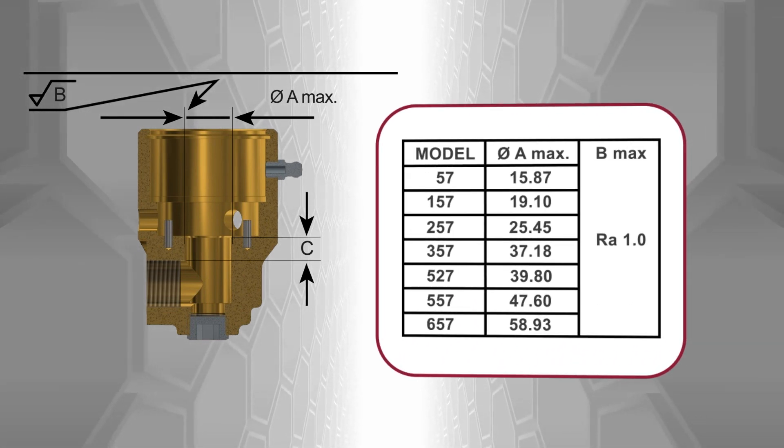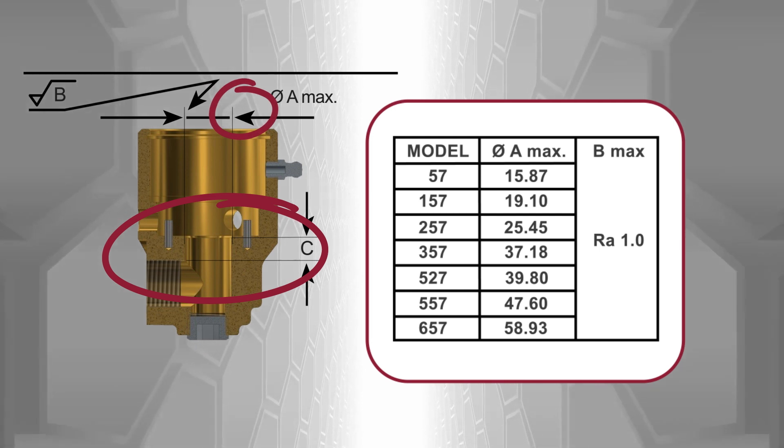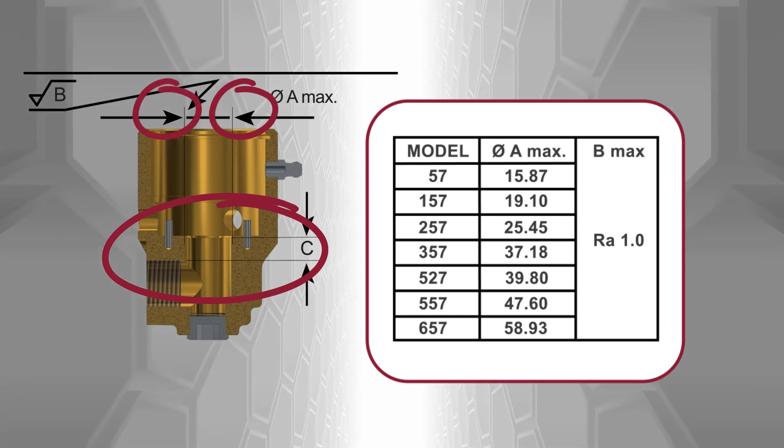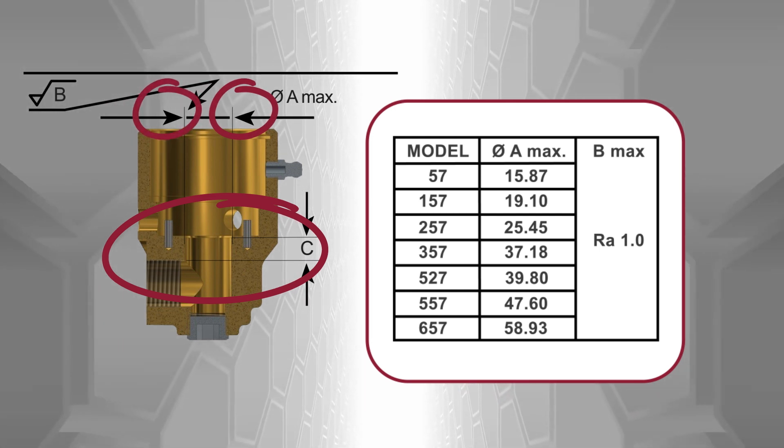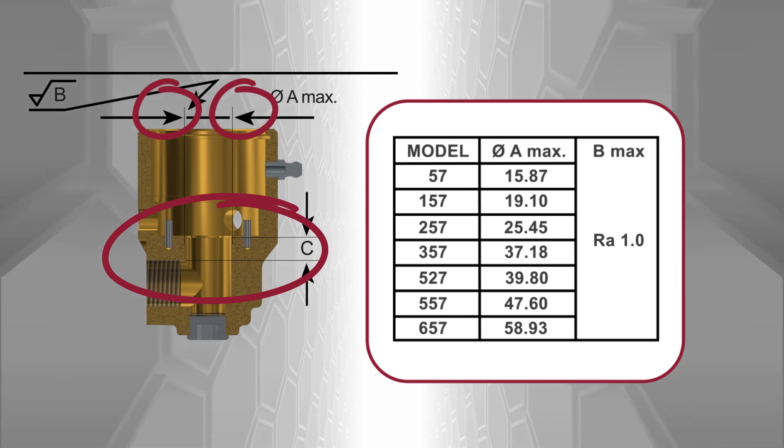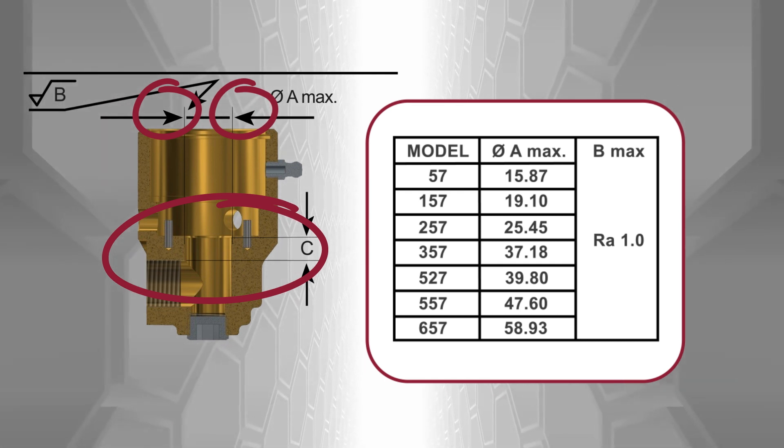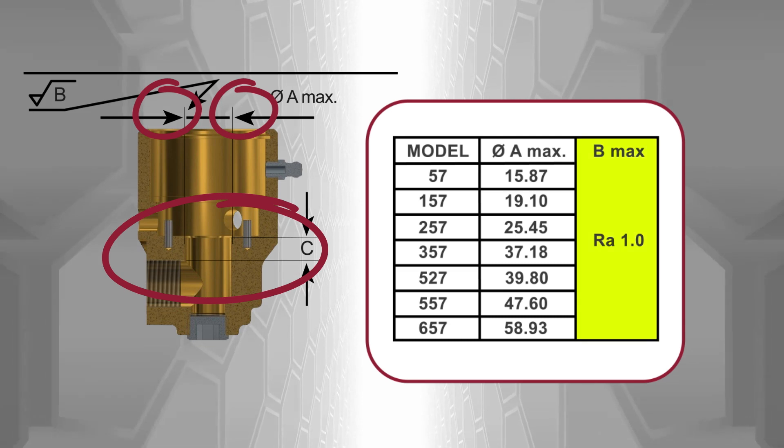Within the area labeled C, the bore surface A must be smooth to a maximum roughness value B. For all 57 Series models, the maximum roughness value for B is RA 1.0.